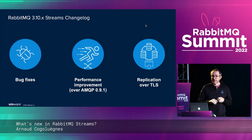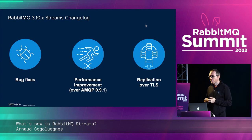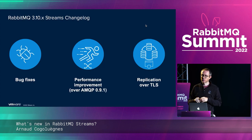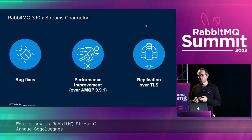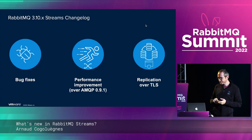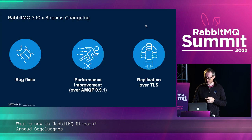In 3.10, we had a few bug fixes, improved performance for the AMQP implementation of streams (since that's a specific queue type), and we also added replication over TLS.